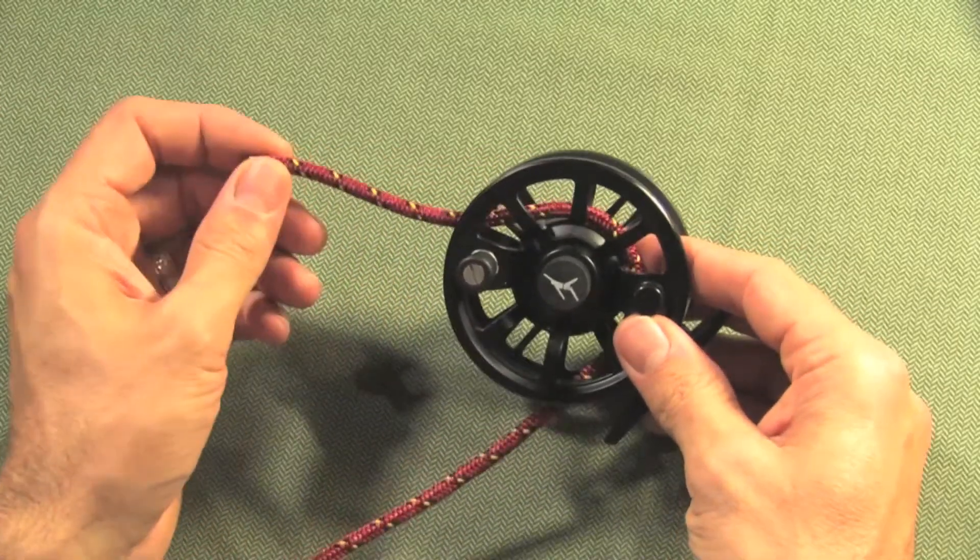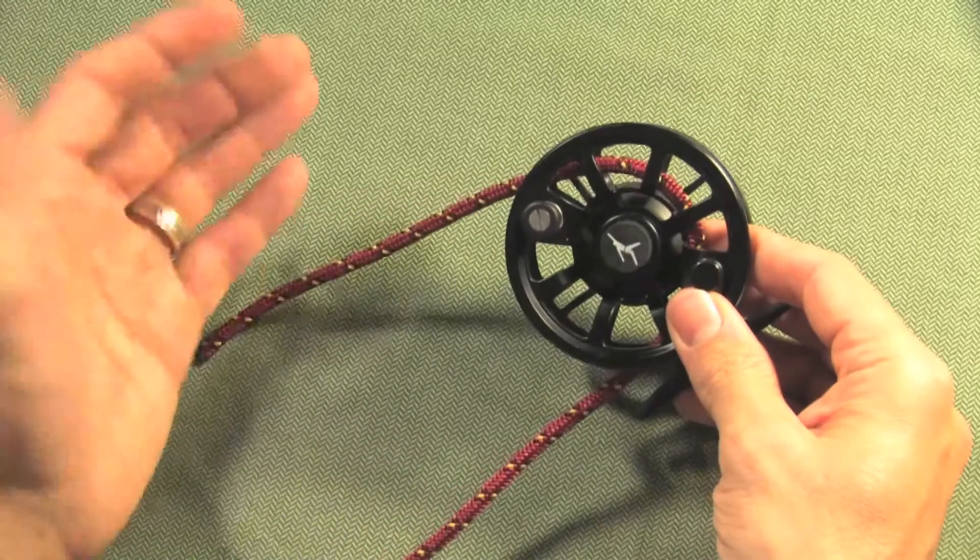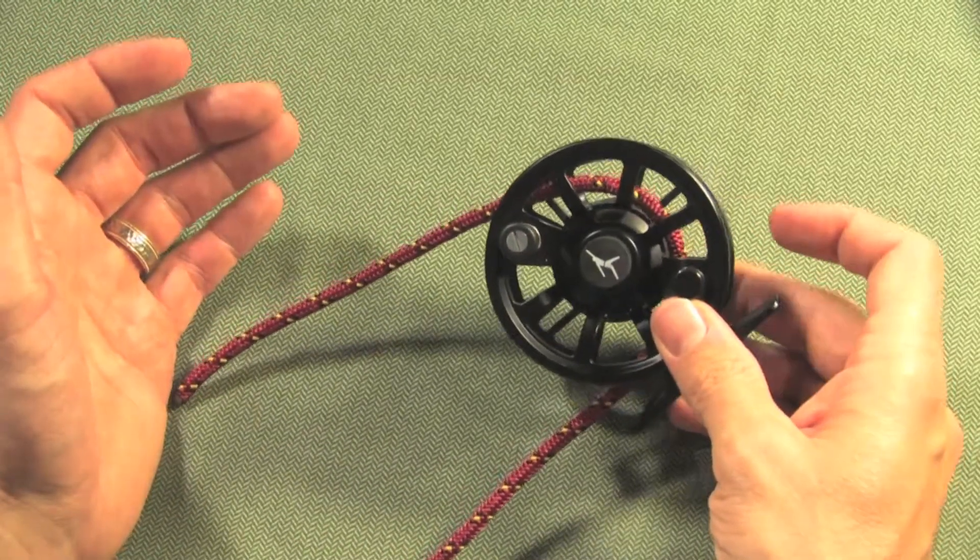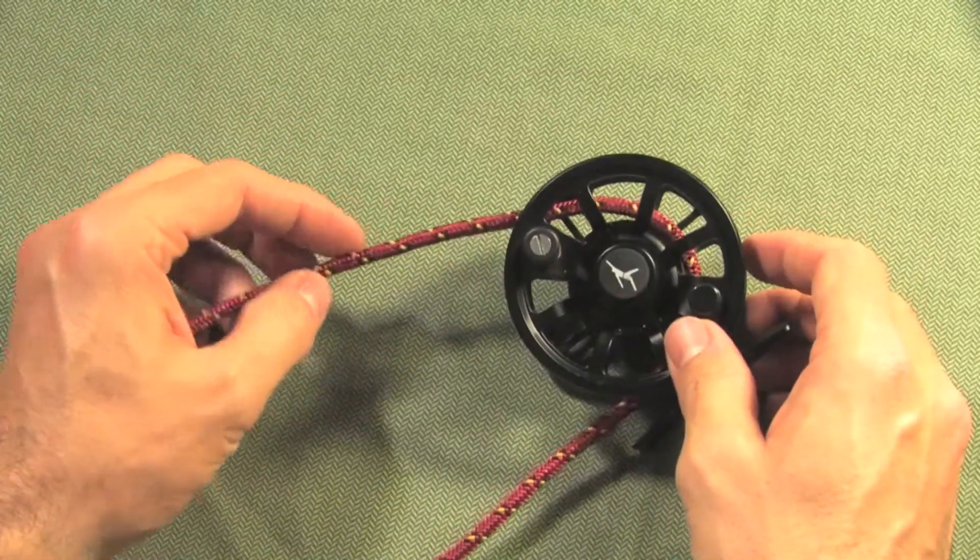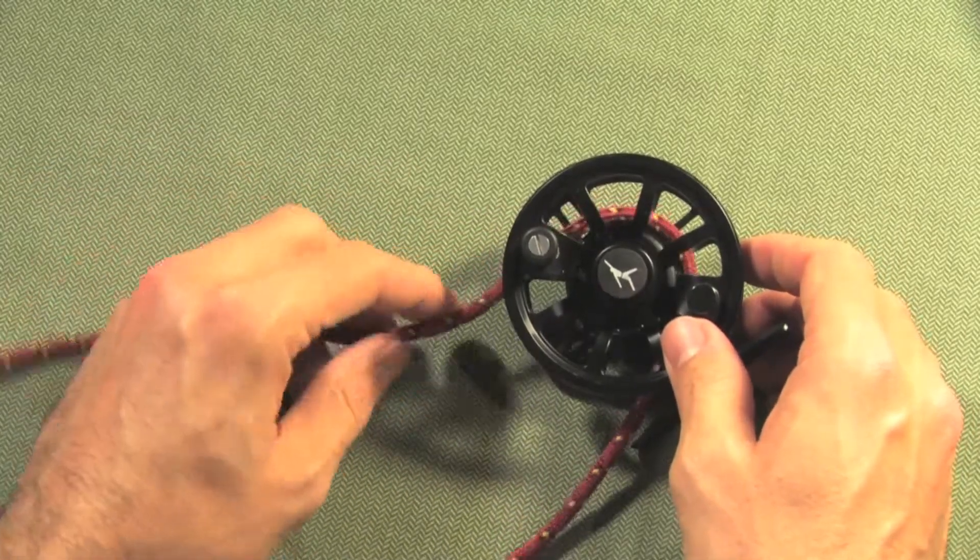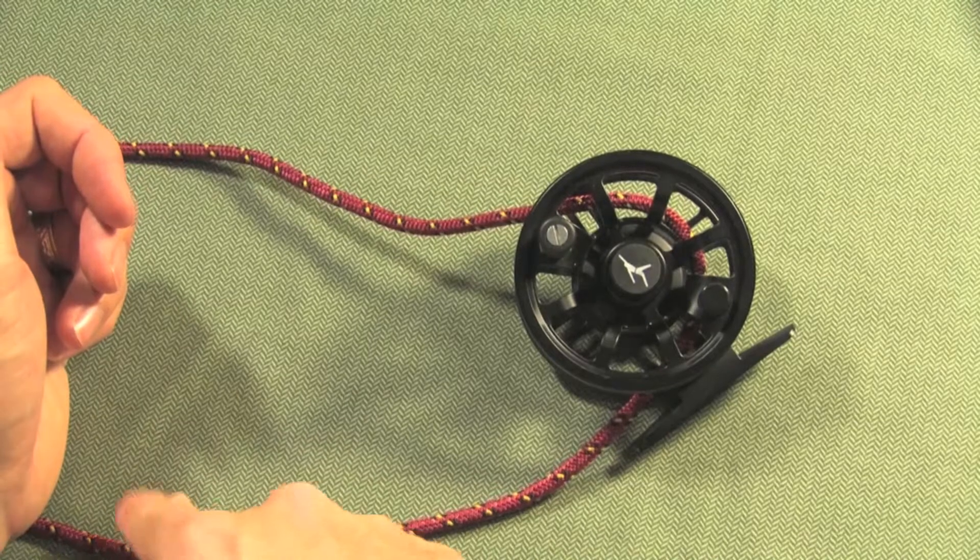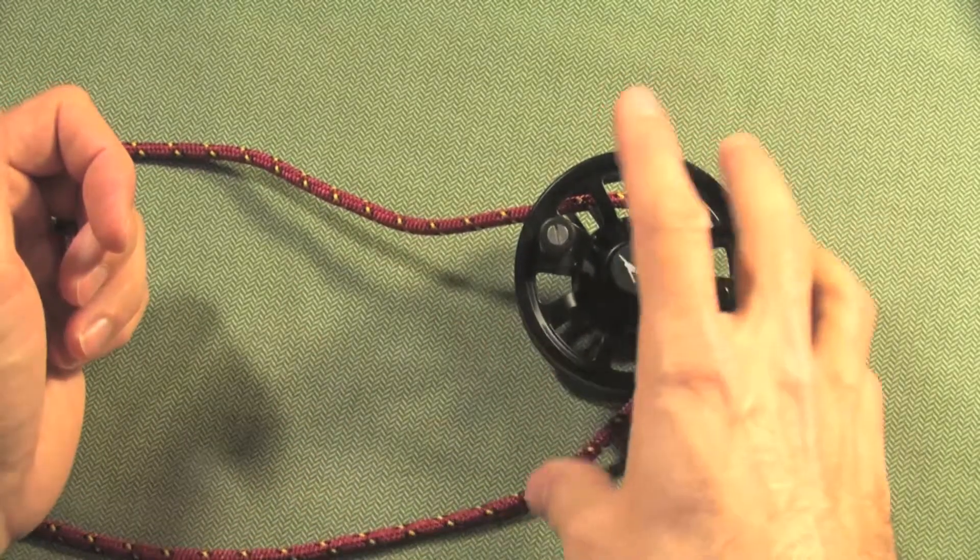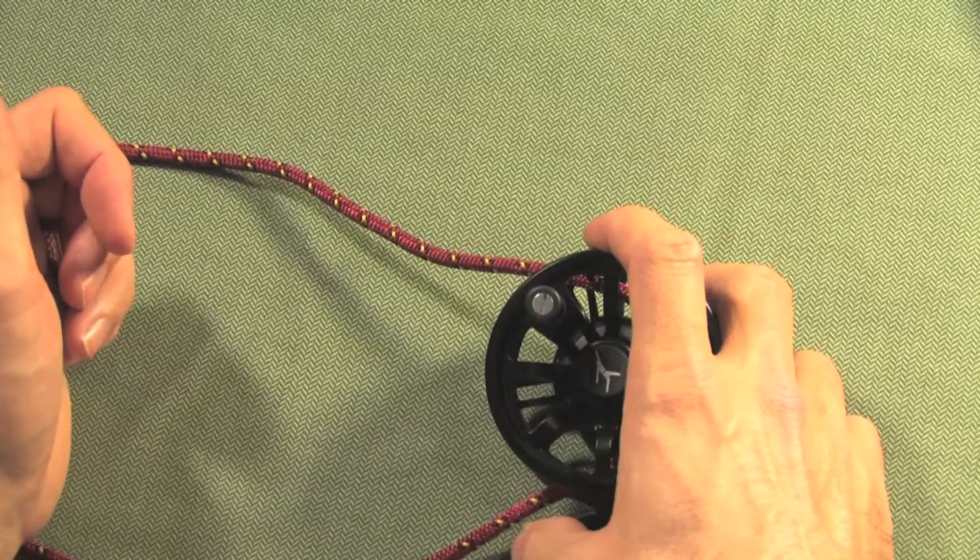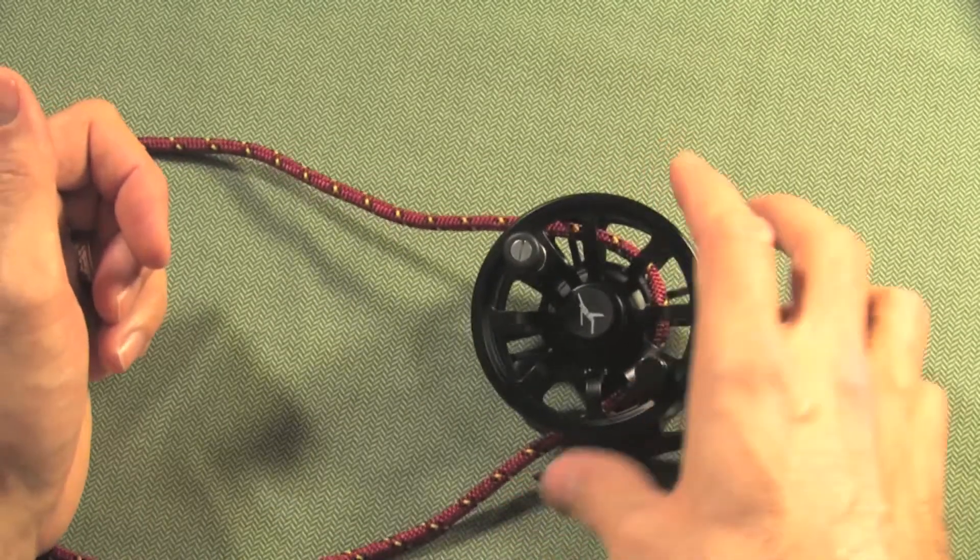by taking the short end of the backing and bringing it around the arbor of the reel. Mind you that this lower section of cord is 50 to 150 yards of backing that you're going to end up winding onto the reel.